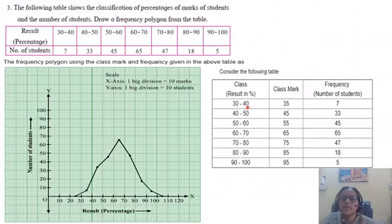30 plus 40, 70 divided by 2, that is 35. 40 plus 50, 90 divided by 2, that is 45. 50 plus 60, 110 divided by 2, that is 55. 60 plus 70, 130 divided by 2, that is 65. 70 plus 80, 150 divided by 2, that is 75.